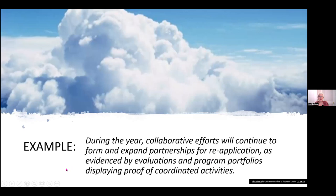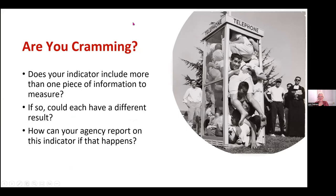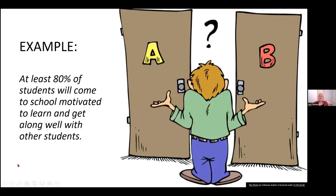Another hazard: cramming — putting more than one piece of information in a single indicator where the different pieces might have different answers. Here's an actual example: 'At least 80% of students will come to school motivated to learn and get along well with other students.' Do you only count students who satisfy both conditions? What about students who are motivated to learn but don't get along well? Make sure each performance indicator measures only one thing.